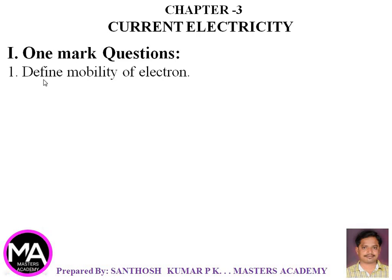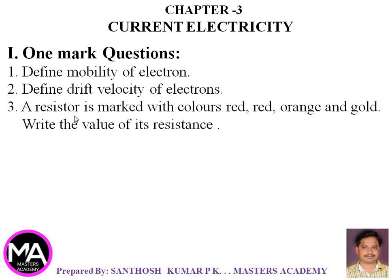First question: Define Mobility of Electron. Second question: Define Drift Velocity of Electrons. Third question: A resistor is marked with colors red, red, orange and gold. Write the value of its resistance.